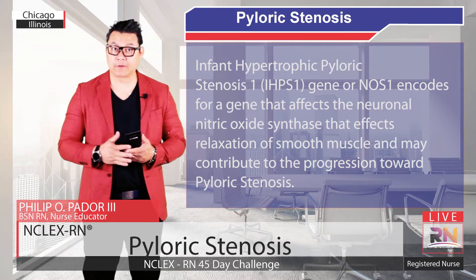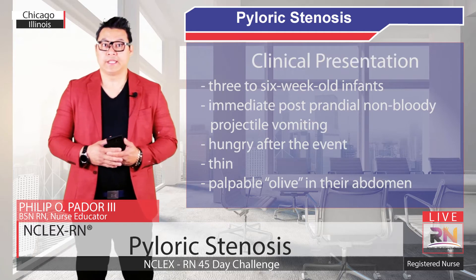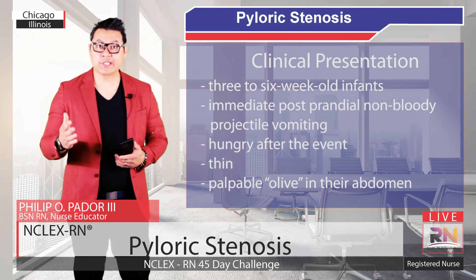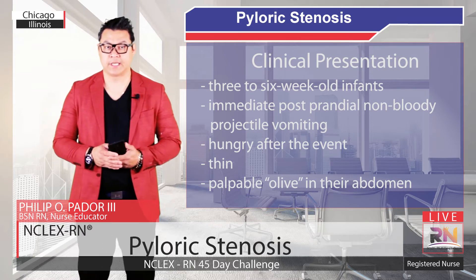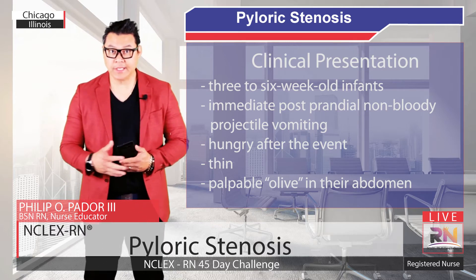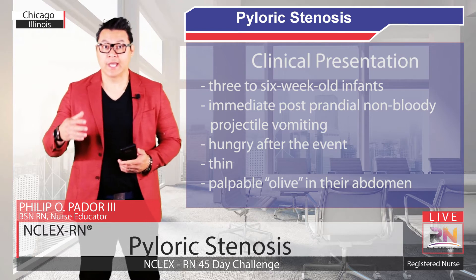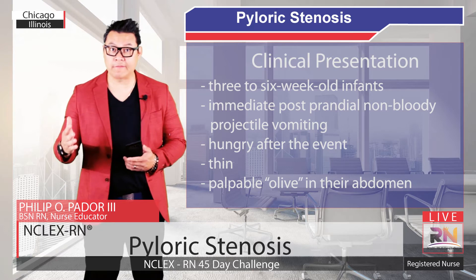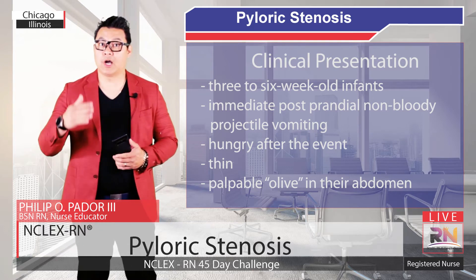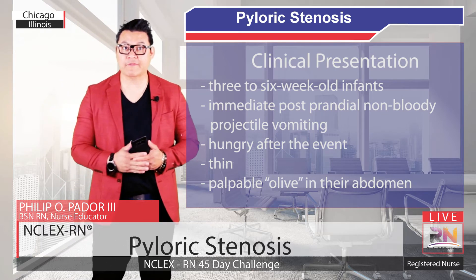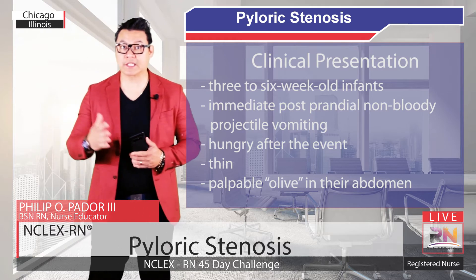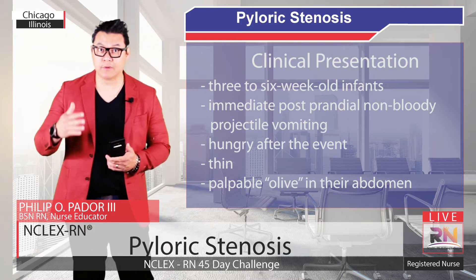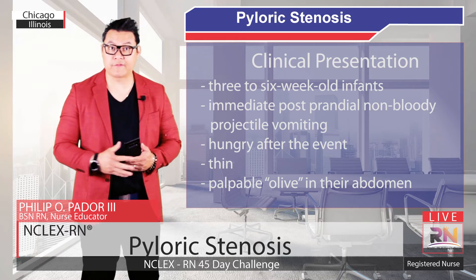The clinical presentation is important to remember when evaluating a child for whom this may be a diagnosis. The patients are thin and dehydrated if these conditions have gone on long enough, and they can have a palpable olive in their abdomen. The olive is felt best immediately after emesis, as the stomach is more decompressed at that time. This exam feature is almost always pathognomonic for this condition.